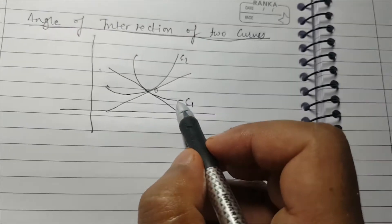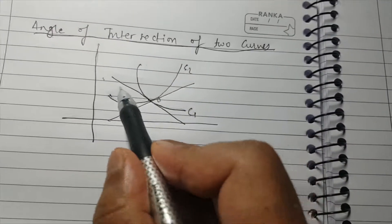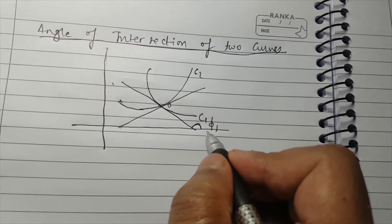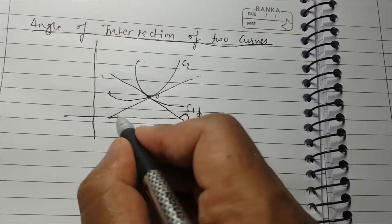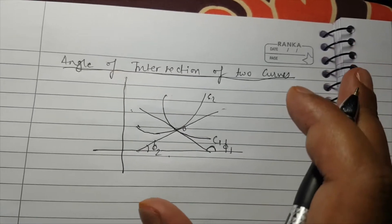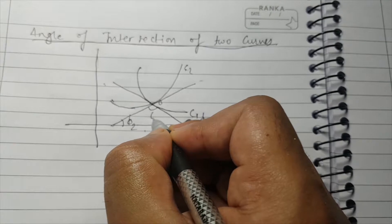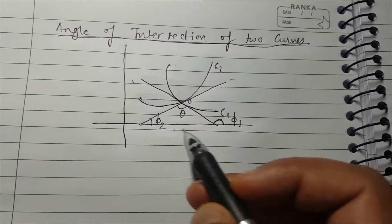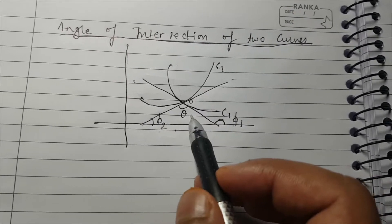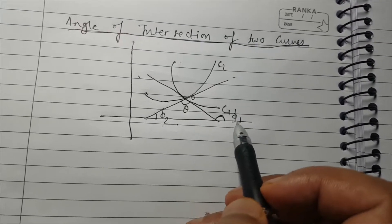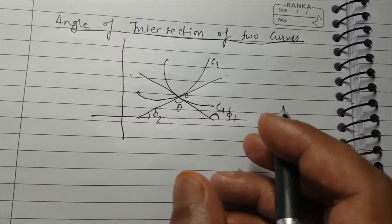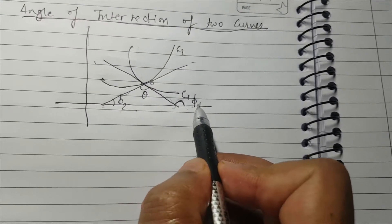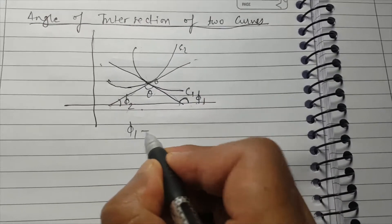The angle that the tangent to C1 makes with the positive x-axis, let us call it phi1. The angle that the second tangent makes with the positive x-axis, let us call it phi2. The angle between the two tangents which we have to find is theta. From basic geometry, using the exterior angle property of a triangle, phi1 equals theta plus phi2.